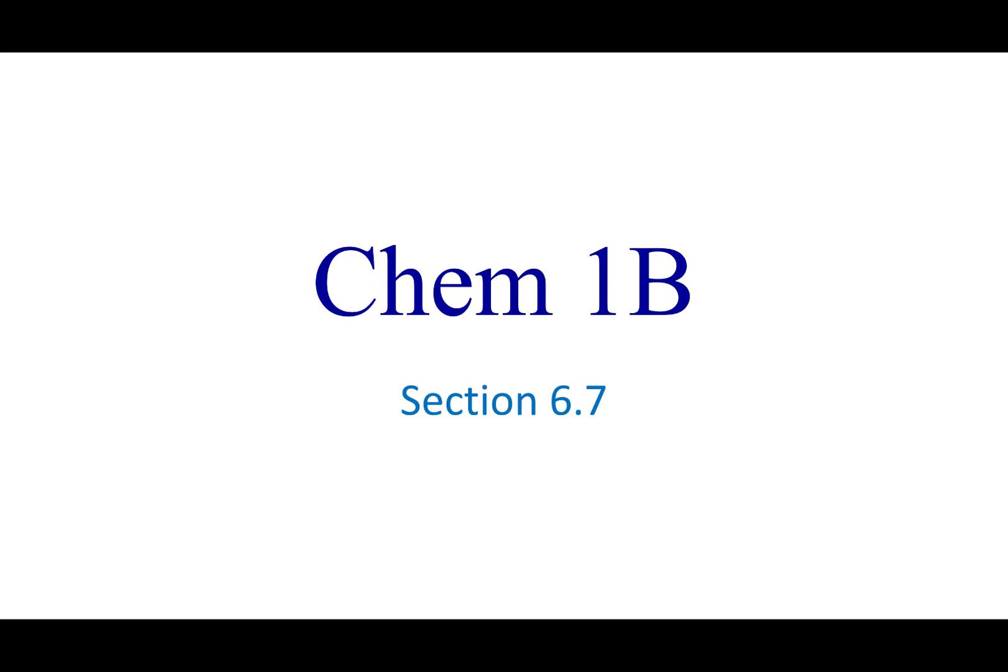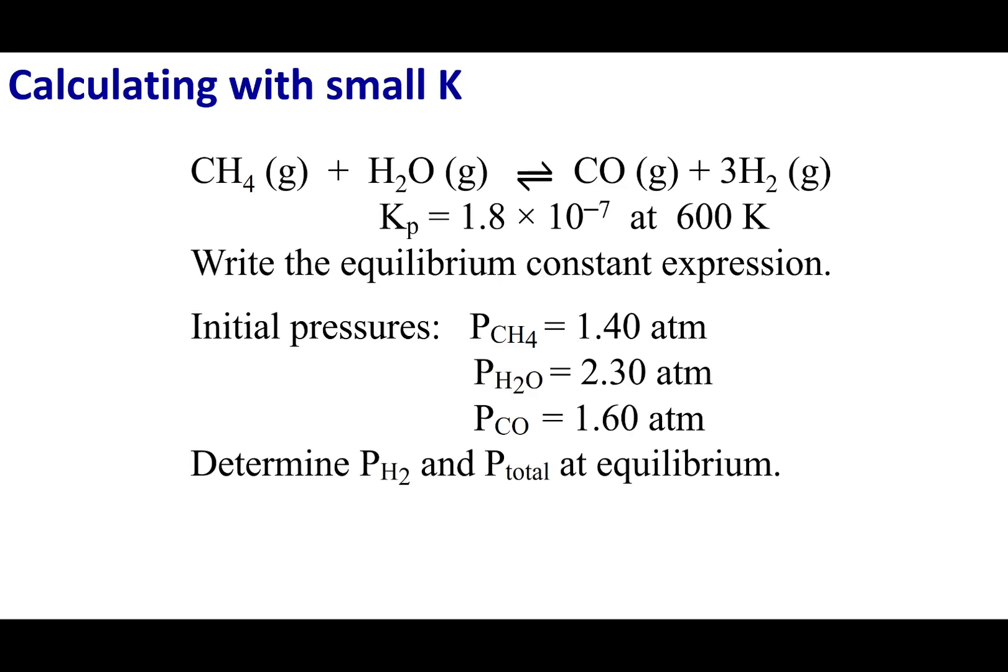Welcome to section 6.7. We're going to keep practicing these ICE tables and add a little bit of nuance. Take a look at this equilibrium equation and notice the Kp value I'm giving you. What I want to talk about is when we have a K value that is really, really tiny, something like 10 to the negative 2, 10 to the negative 3, 10 to the negative 4, or less.